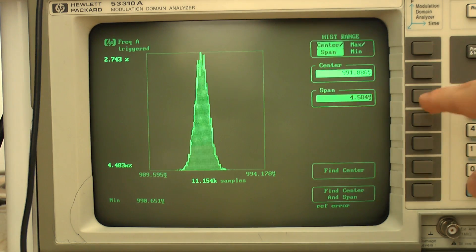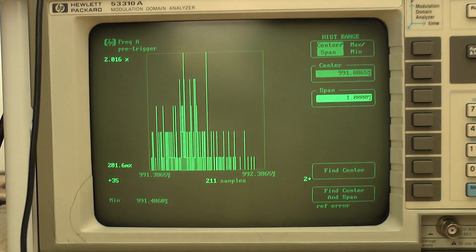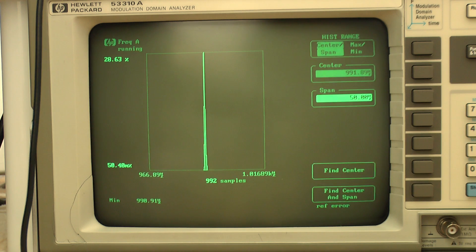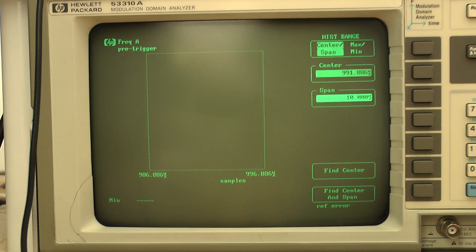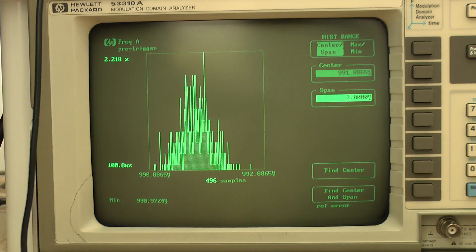Now I've changed into center and span mode. And now I'm increasing the span. And now I'm decreasing the span. And as you see, with a span of 50 Hz, you have the normal needle-like result you would expect. While if you dig in, the histogram becomes wider and wider.